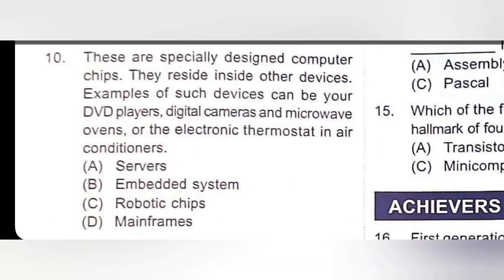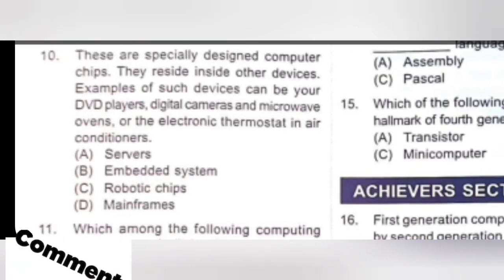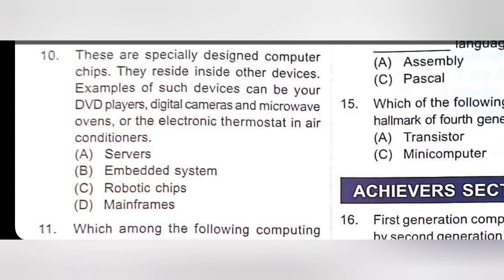These are specially designed computer chips. They reside inside other devices. Examples of such devices can be your DVD player, digital cameras, microwave oven, or the electronic thermostat in air conditioners. These are not servers. The answer is embedded system — embedded system is the right option, not robotic chips, not mainframes. So B is the right option.